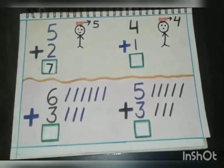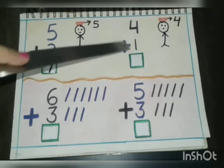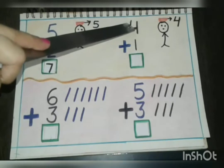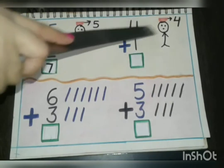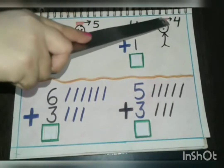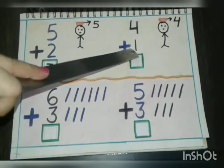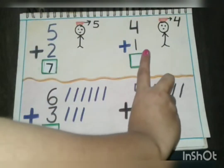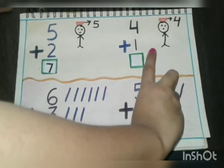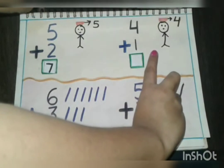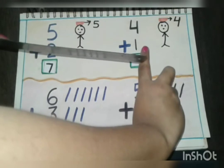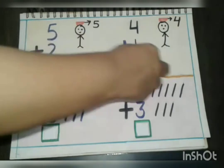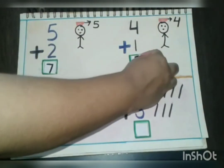Now next numbers are four plus one. So which is the bigger number? Four is the bigger number. We will keep four in our head and how many fingers we will open? We will open one finger and let's count. Four is in our head and after four what will come? Five. So our answer is five. Very good children.